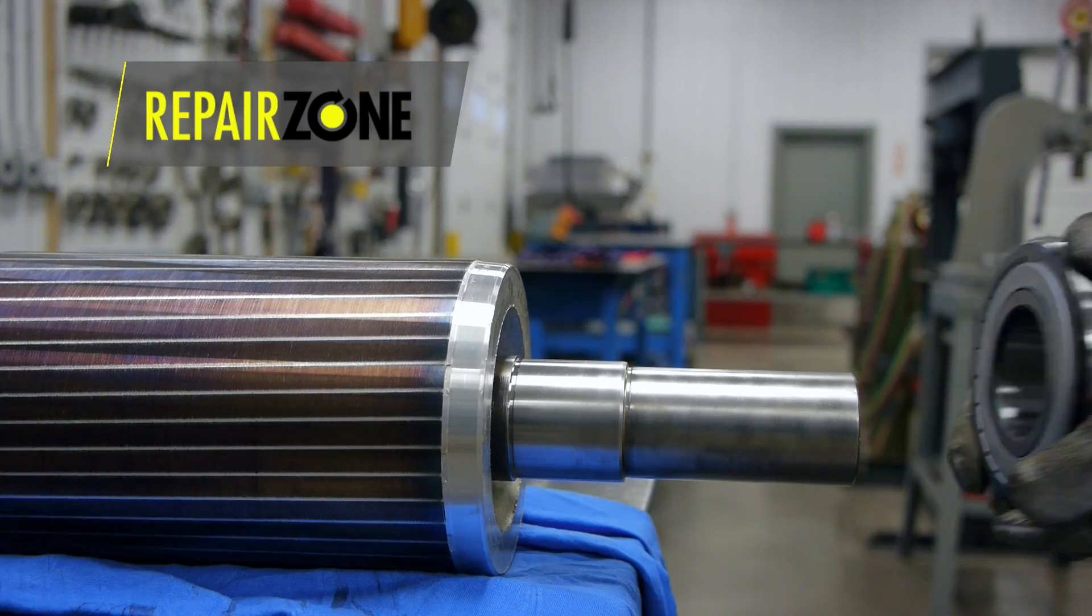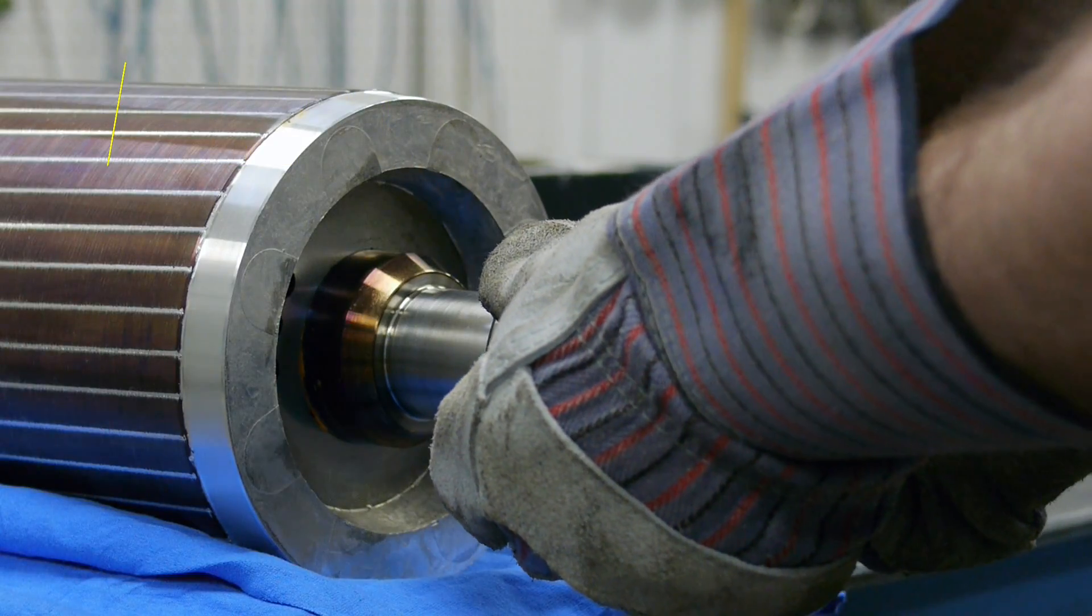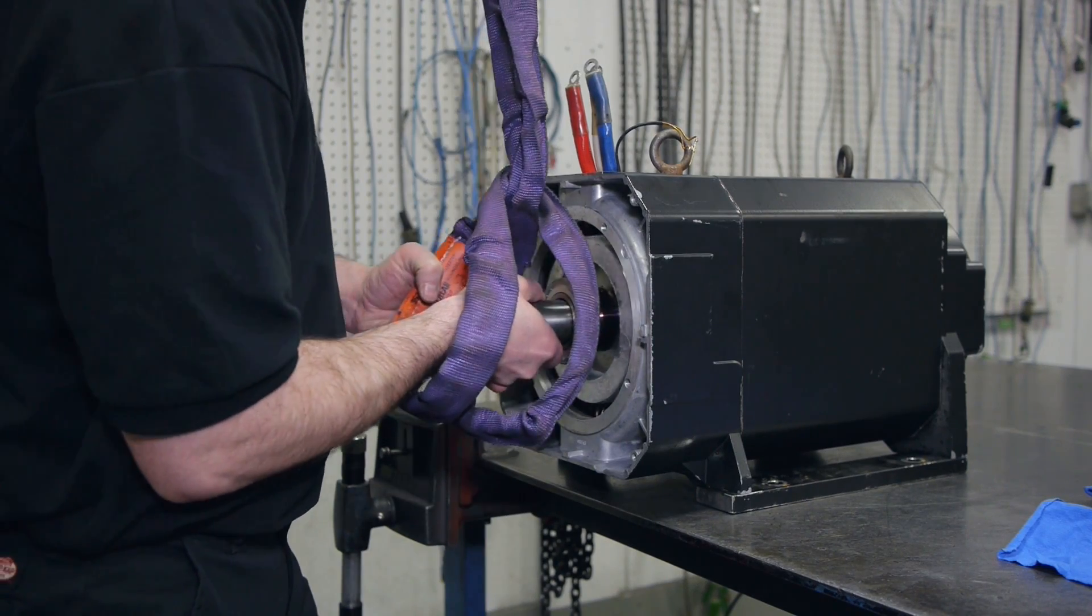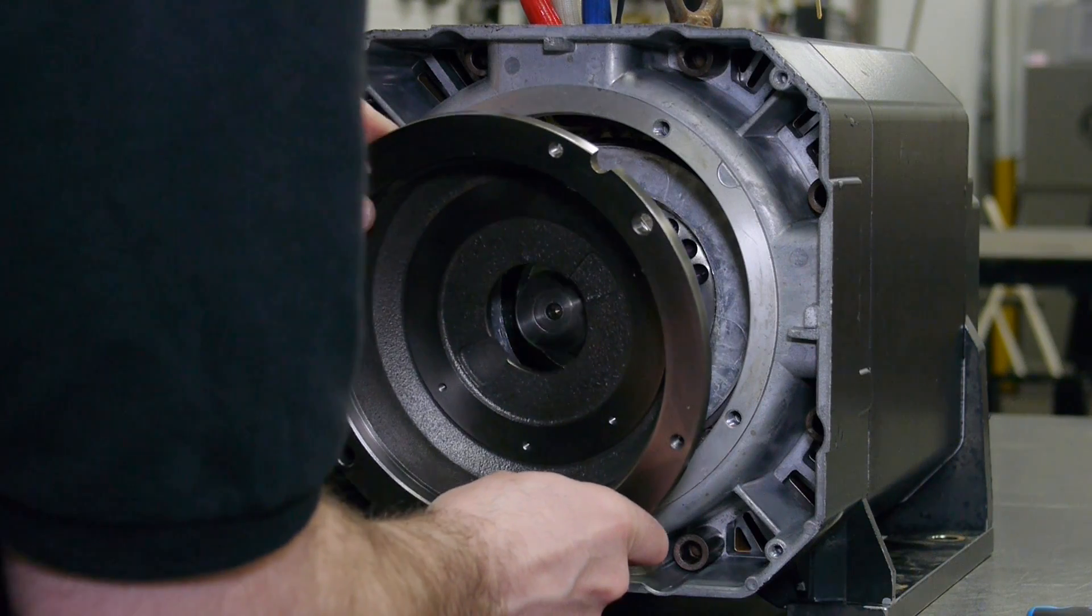During assembly, new bearings are installed. The stator is megged again after the wash and bake. The rotor is put into place. Motor housing and end bell are installed.